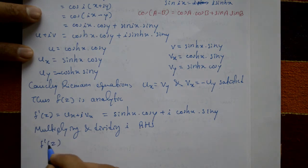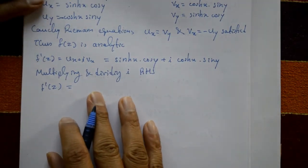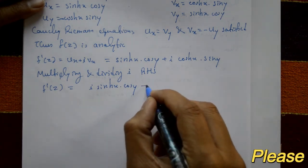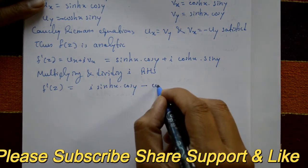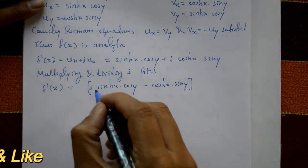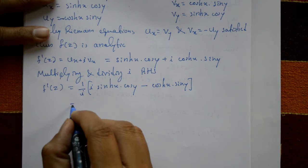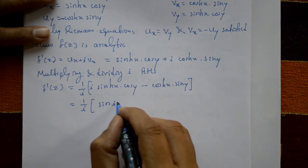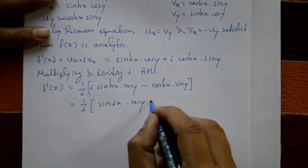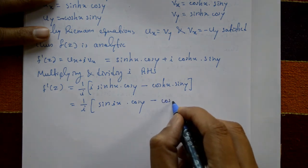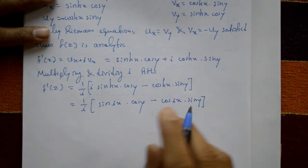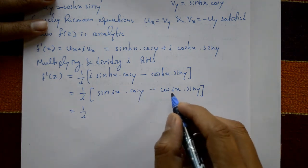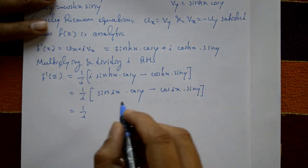Multiply and divide by i: f'(z) = (1/i)·[i·sinh(x)·cos(y) + i²·cosh(x)·sin(y)] = (1/i)·[i·sinh(x)·cos(y) - cosh(x)·sin(y)]. Now i·sinh(x) = sin(ix) and cosh(x) = cos(ix), so this becomes (1/i)·[sin(ix)·cos(y) - cos(ix)·sin(y)].